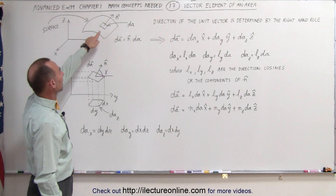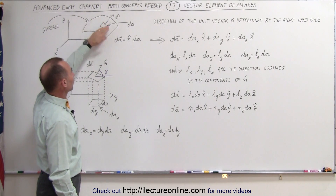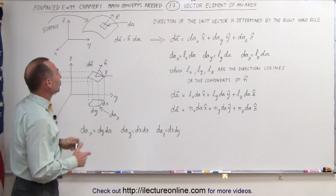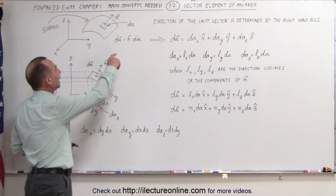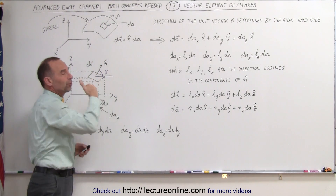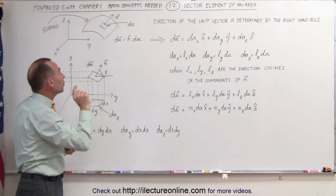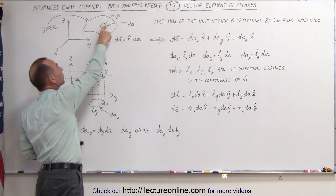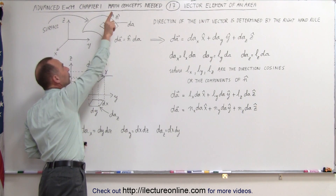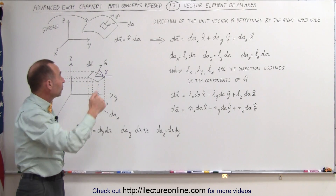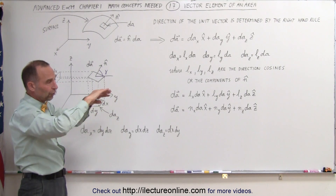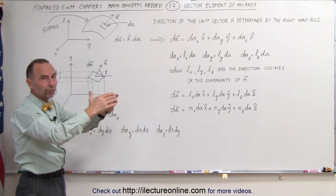So here we have a small area element on top of a surface. Imagine there's a surface here in a three-dimensional universe. We have a small area segment and we want to also express the direction of that segment. We do that by having a perpendicular unit vector from the surface of that area element off into space. The direction of that is determined — it could be in the other direction — but direction is determined such that if you have the curvature of a surface you want to be on top of the surface.